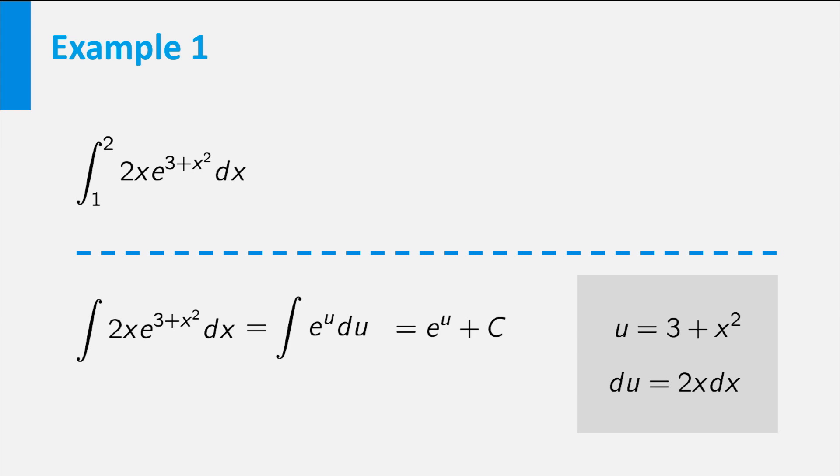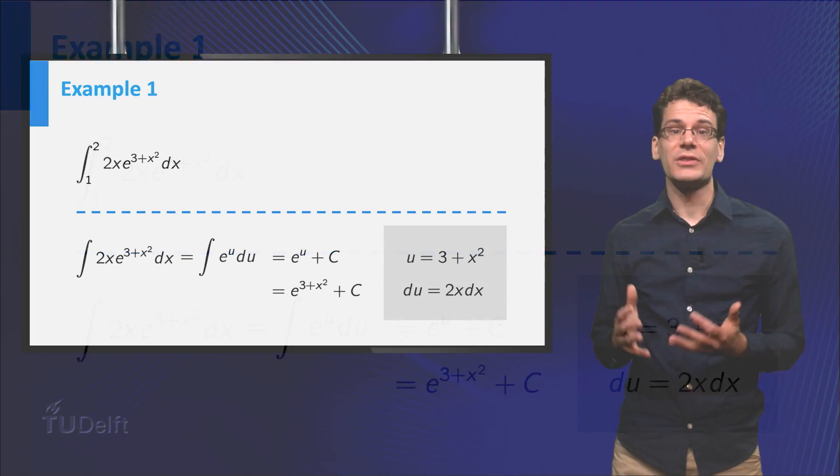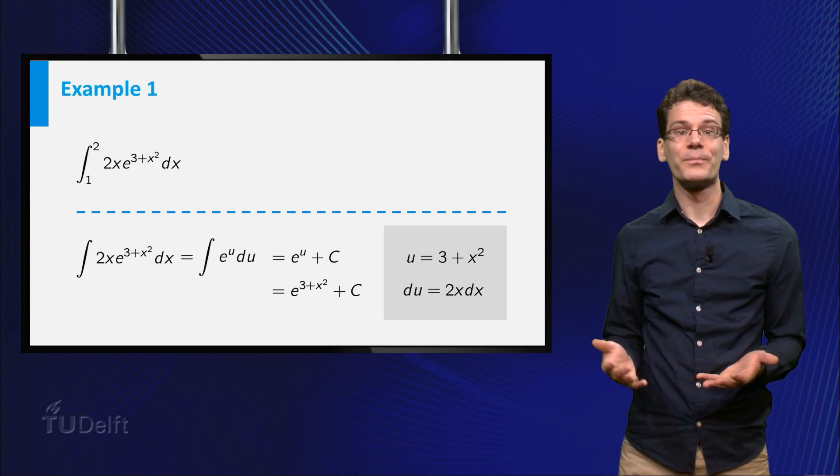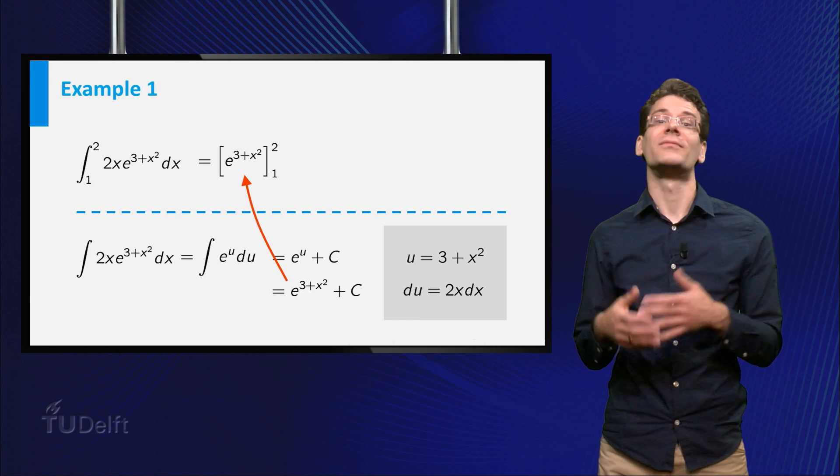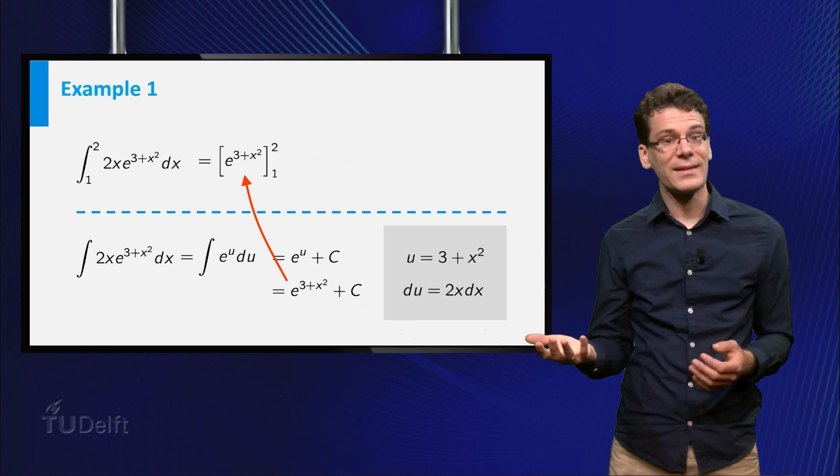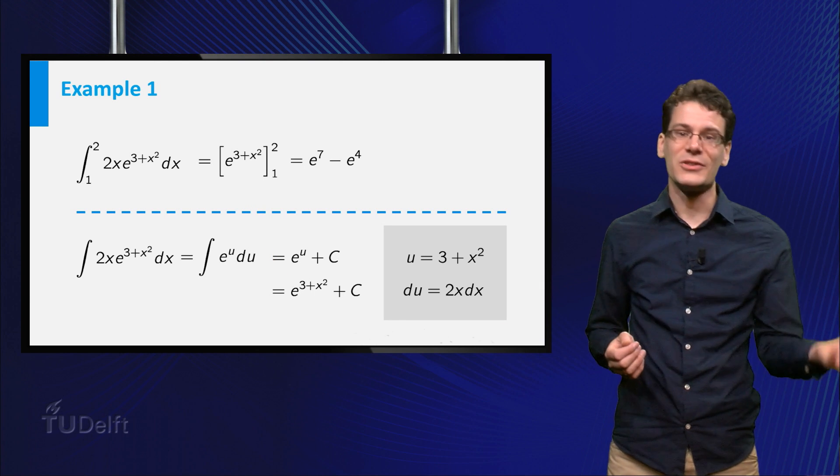This is equal to e to the power u plus c. In terms of x, we get e to the power 3 plus x squared plus c. We can use this antiderivative to evaluate our original integral. Plug the upper boundary and the lower boundary into the antiderivative and subtract. We get e to the power 7 minus e to the power 4.